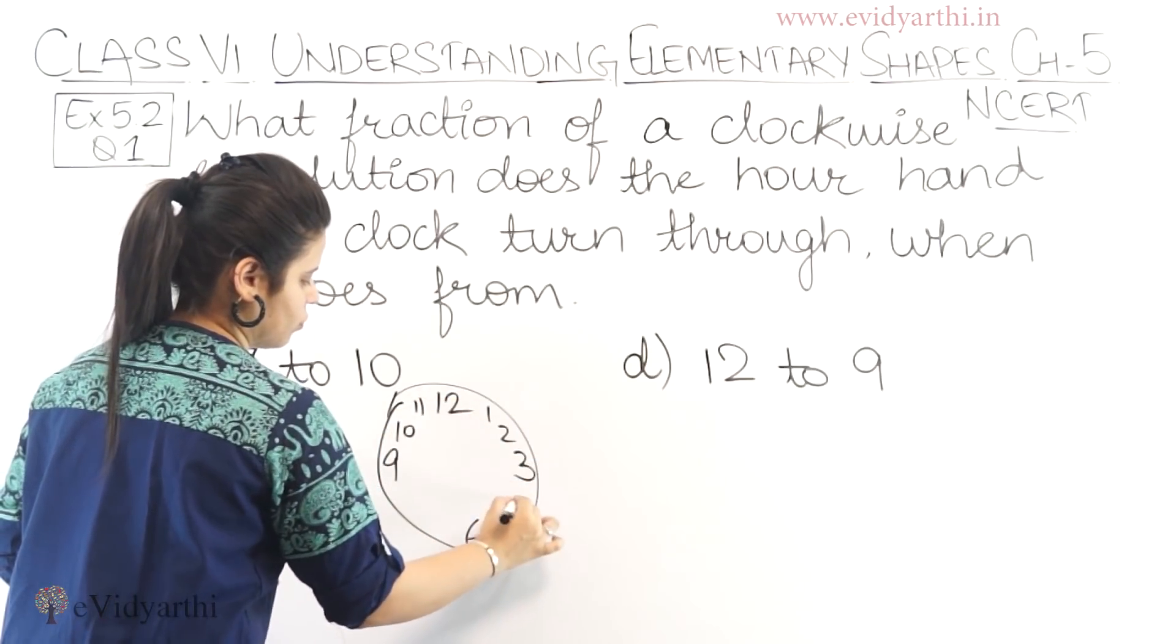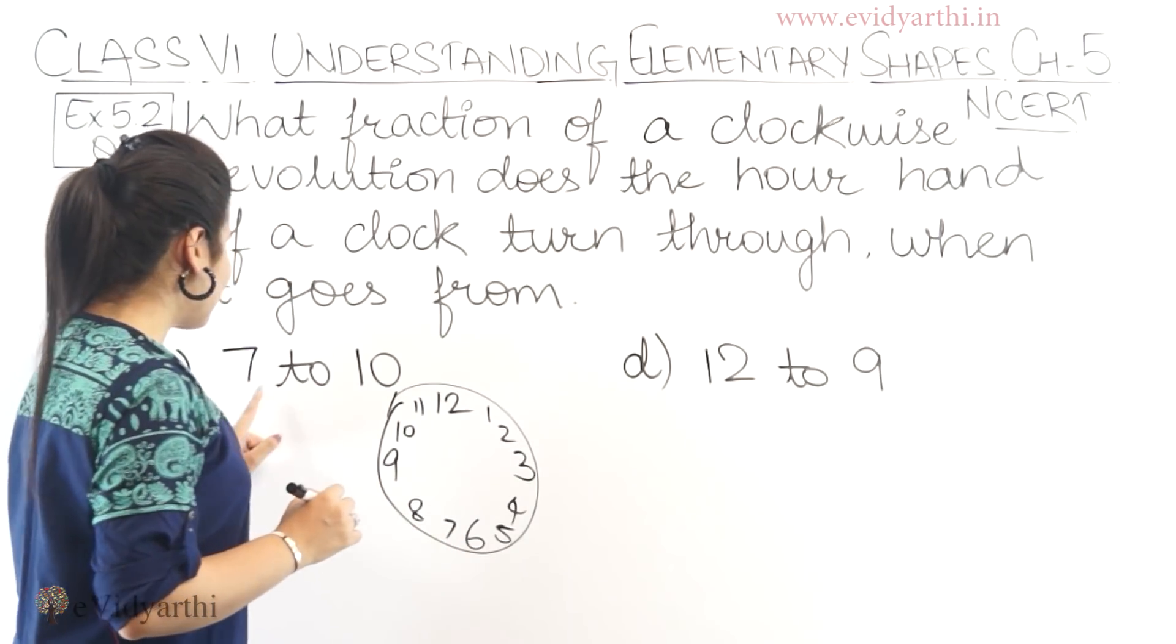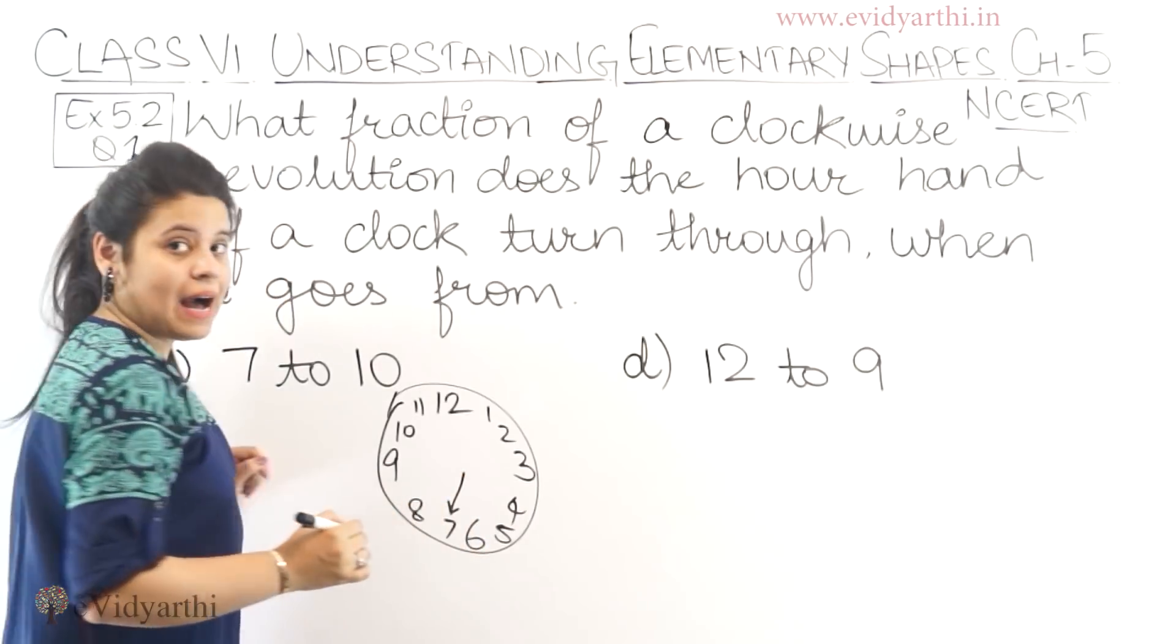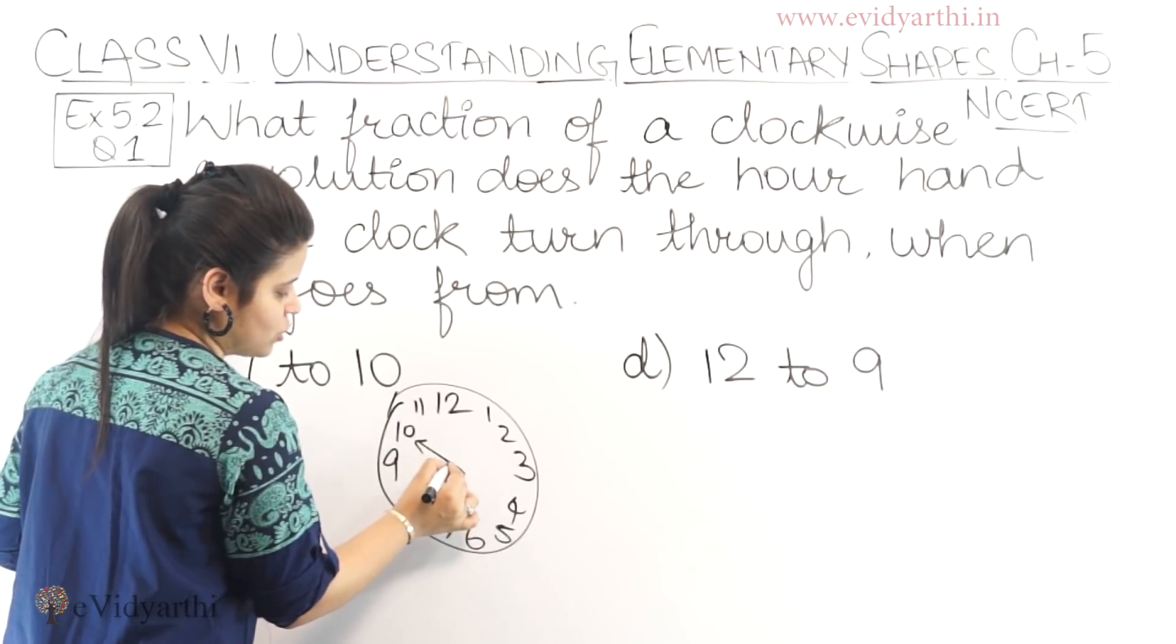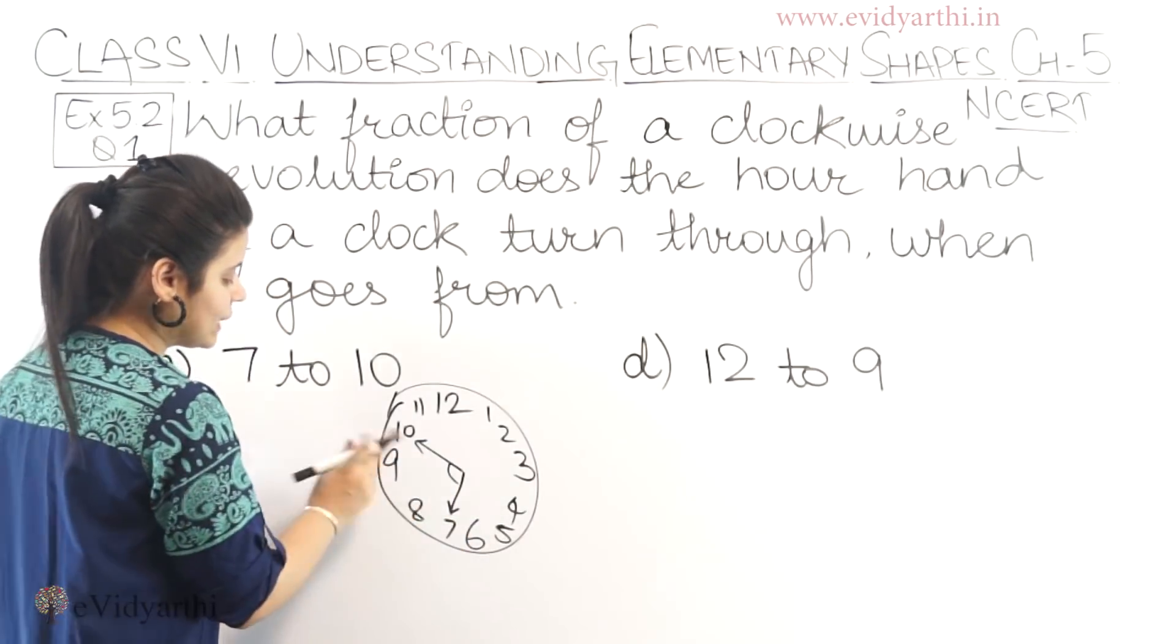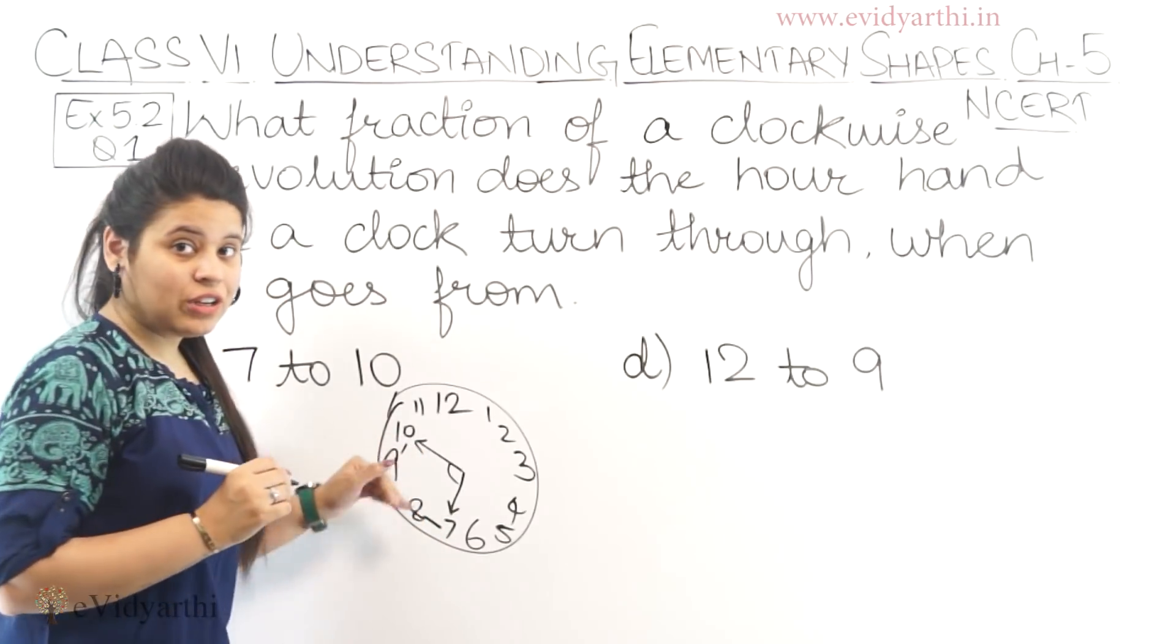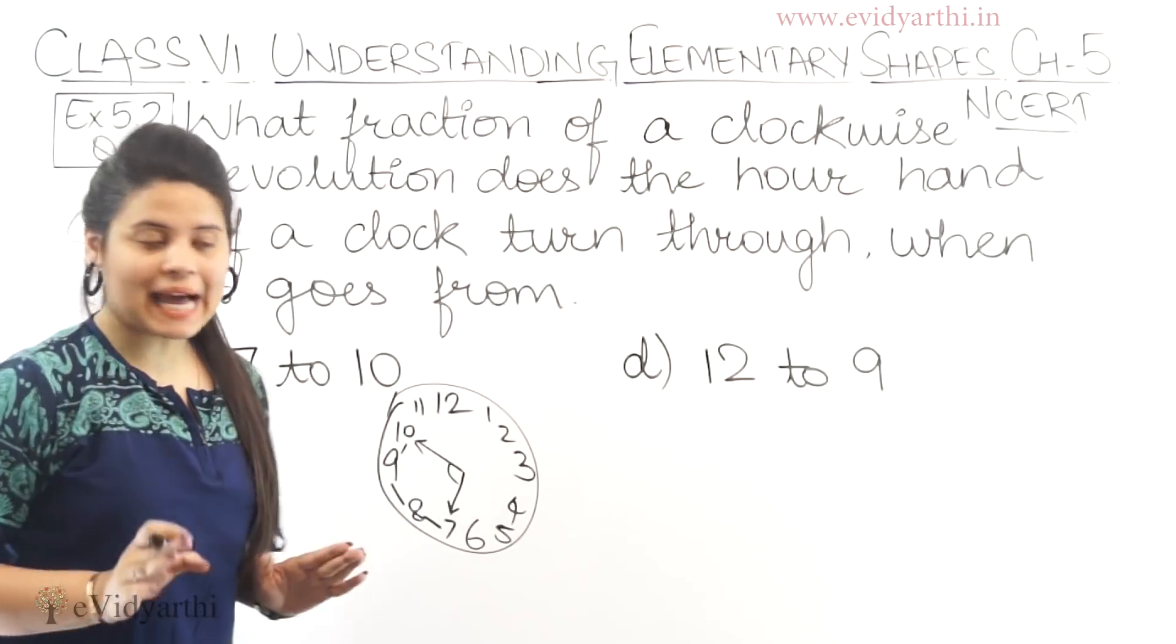1, 2, 4, 5, 7, 8. Okay? Now, from 7 to 10. Matlab agar 7 pe aya aapka hour hand and then put 10 tak ja raha hai. Right? So, you have to first judge what angle is this. So what is the difference? One, two, three. Three ka difference means a right angle. Or we can say 90 degree angle.